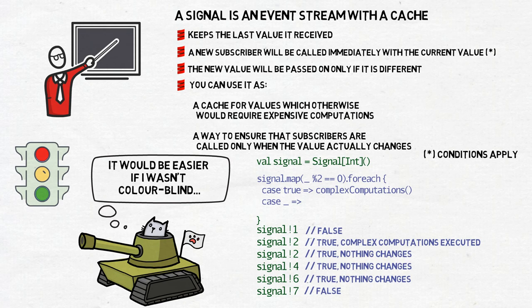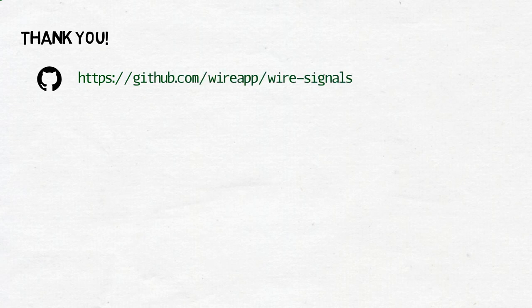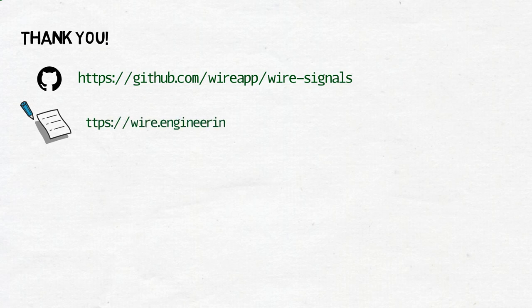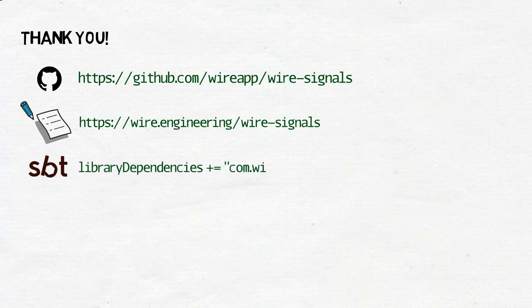I think with this I will finish this talk. You can look at the GitHub where the code of Wire Signals is stored. You can read the documentation together with ScalaDocs. And if you want to play with it, you can just use SBT and download the package. My name is Maciek — you can always find me on Twitter. Thank you very much.